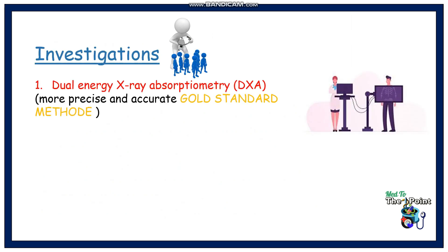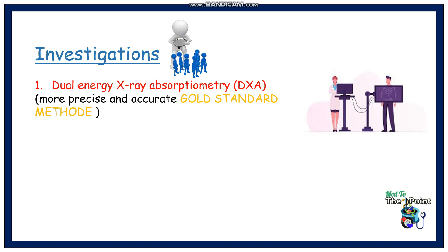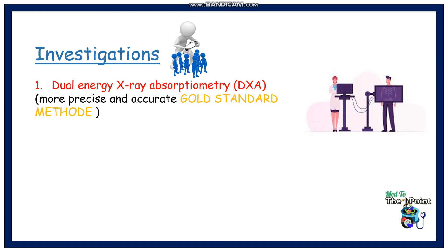Regarding investigations: dual energy X-ray absorptiometry, also known as DXA, measures areal bone density, usually of the lumbar spine and proximal femur. It is precise, accurate, uses low doses of radiation, and is the gold standard in osteoporosis diagnosis.